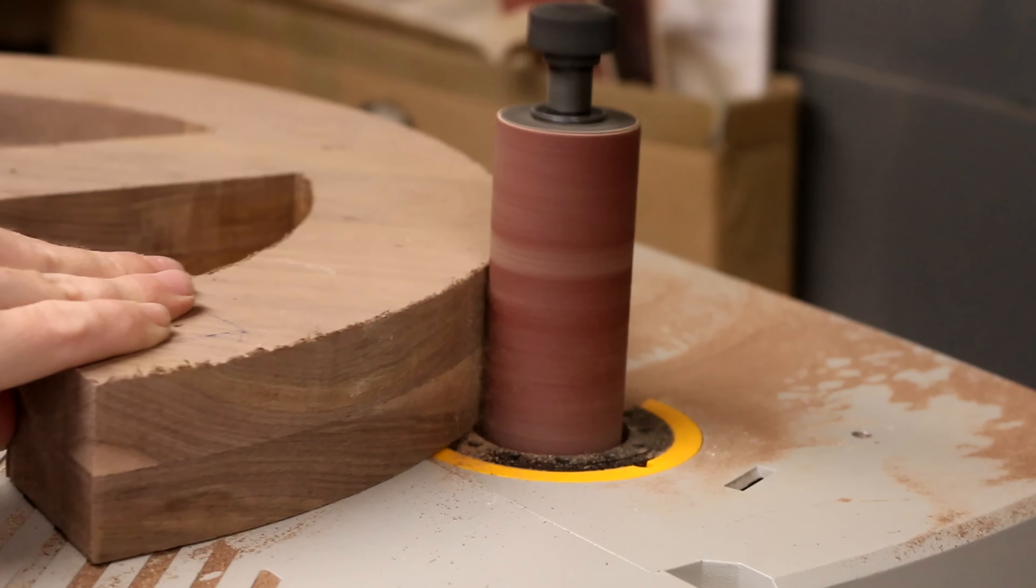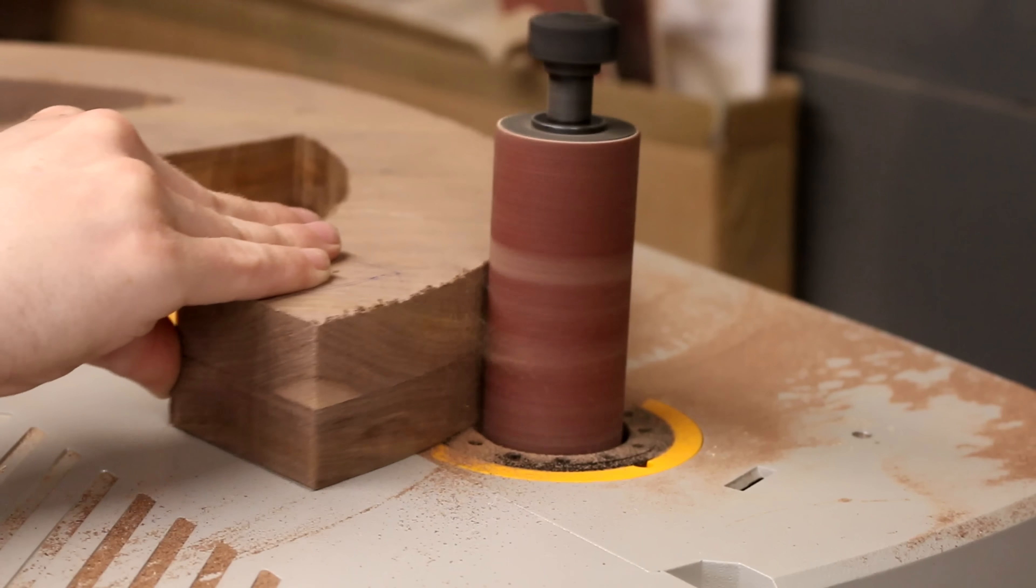The router isn't quite large enough, so I use my spindle sander to remove the rest and smooth out the edges.